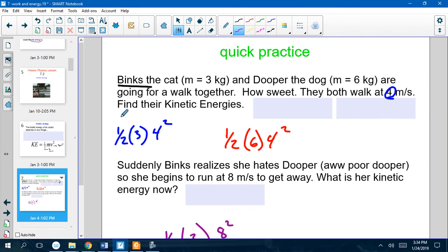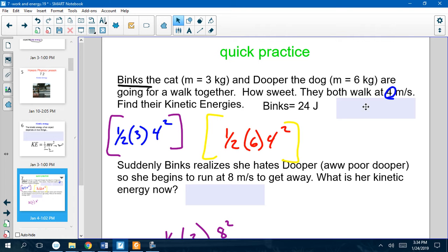So, here we have Binks, over here. His mass is three, so half of three times four squared, and then we have Dooper, who's over here, who's a little bit more massive, and we should end up with 24 joules for Binks, and 48 joules for Dooper.